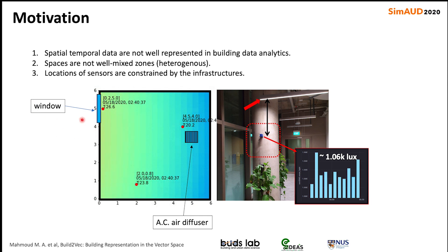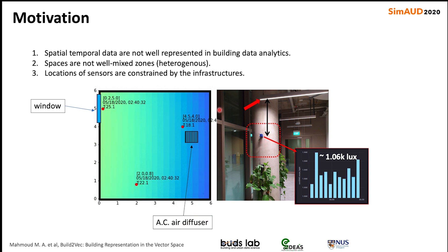For example, is this person sitting near a window, or below a ceiling fan, or below an air conditioning diffuser, given the fact that spaces are heterogeneous and they are not well-mixed zones. Also, in many cases, the location of sensors are constrained by the infrastructures.